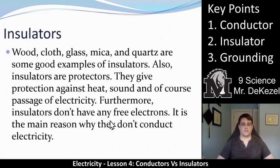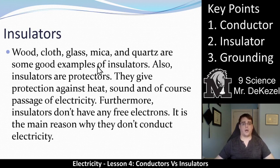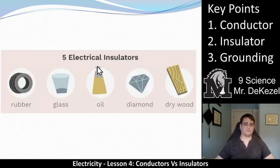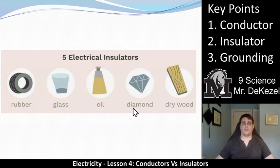Insulators do not have any free electrons, and that is the reason they do not conduct electricity. Electrons are all tied up — they don't have electrons that can move, so they do not conduct electricity well. Rubber is a good insulator, glass is a good insulator, as are oil, diamond, and wood that does not have any water in it — because water is a conductor.